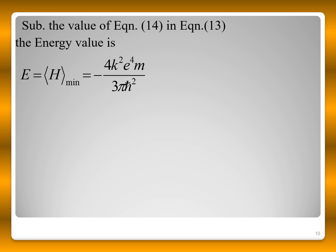This is the ground state energy of the hydrogen atom evaluated using the Gaussian trial wave function with the variation method.